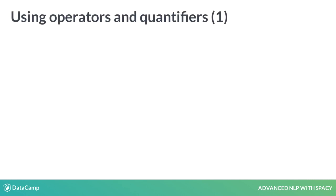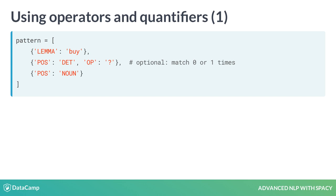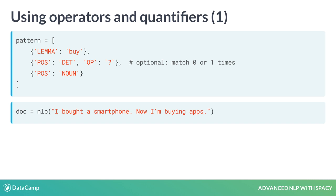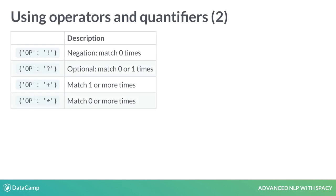Operators and quantifiers let you define how often a token should be matched. They can be added using the OP key. Here, the question mark operator makes the determiner token optional, so it will match a token with a lemma 'buy', an optional article, and a noun. OP can have one of four values: an exclamation mark negates the token so it's matched zero times; a question mark makes the token optional, matching zero or one times; a plus matches a token one or more times; and an asterisk matches zero or more times. Operators can make your patterns a lot more powerful, but they can also add more complexity, so use them wisely.